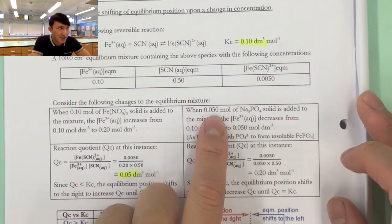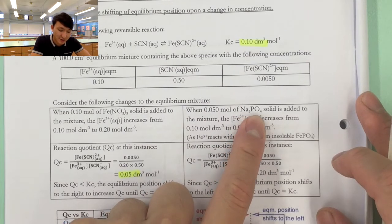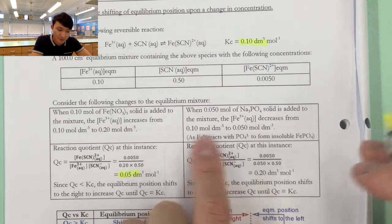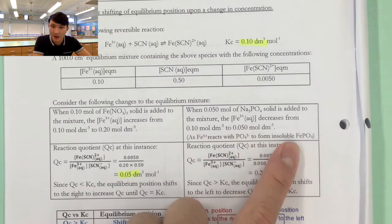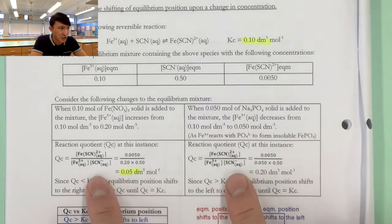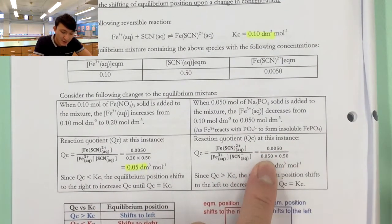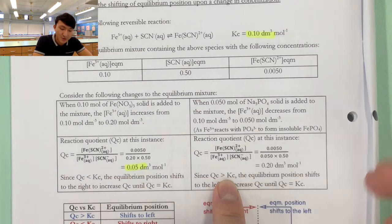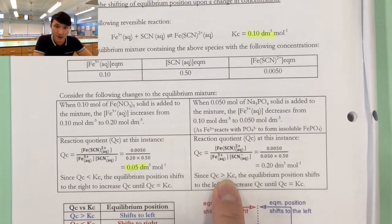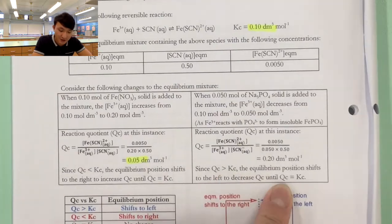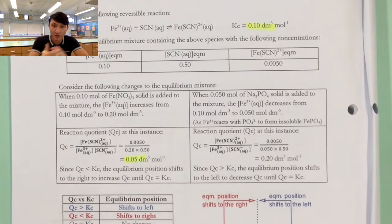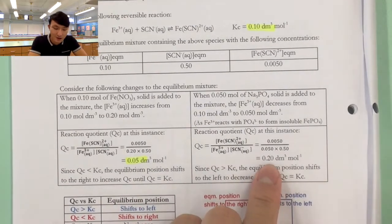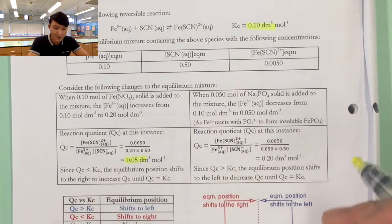In the second situation, we add 0.05 moles of Na₃PO₄, which decreases the concentration of Fe³⁺ from 0.1 to 0.05 because they form a precipitate. Using the same Qc expression and plugging in the numbers with Fe³⁺ = 0.05, we get Qc = 0.2. This time, Qc is larger than Kc. That means we have more product and less reactant compared to equilibrium, so there will be a net backward reaction — the equilibrium shifts to the left until Qc equals Kc, as more product is consumed and more reactant is generated.